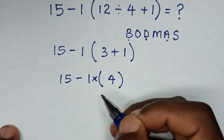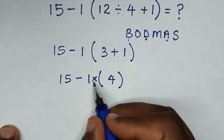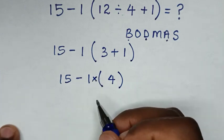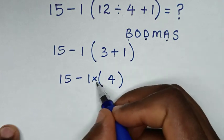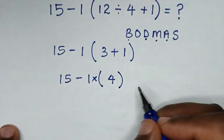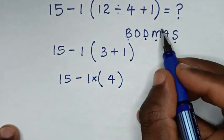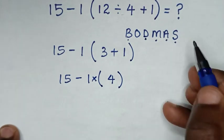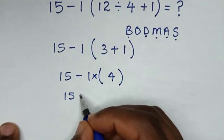We have subtraction and multiplication operations. According to the rule, multiplication comes first, then subtraction. So we'll deal with multiplication first: 15 minus 1 times 4.